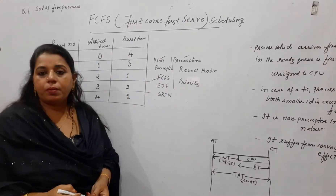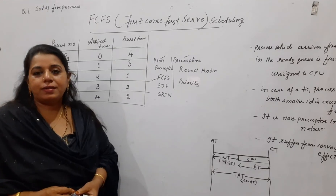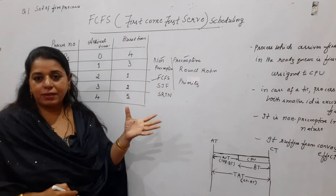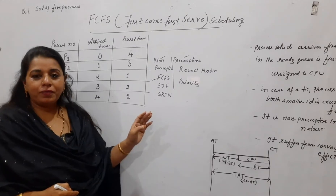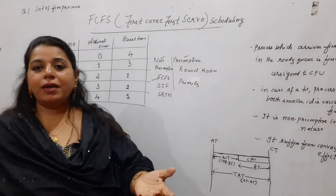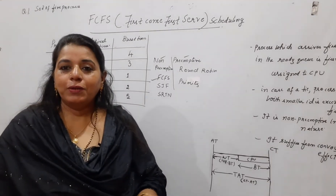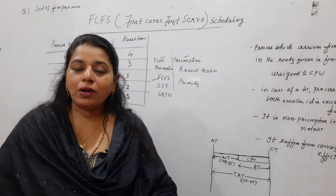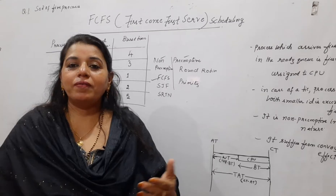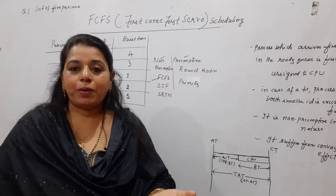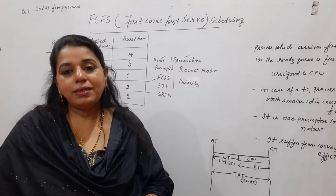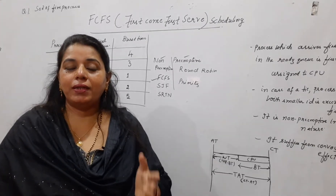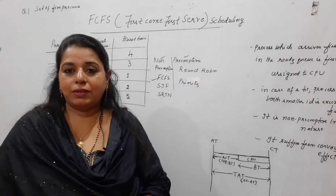In today's session you will come to know about the first scheduling algorithm, called First Come First Serve. You know what scheduling a process means — which algorithm is used in order to schedule the process, what logic is used whenever a scheduler picks a process from the ready queue and assigns that process to the CPU, because in the main memory in the ready queue you have a number of processes.